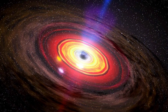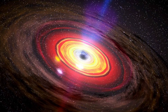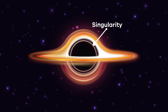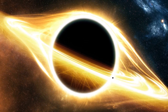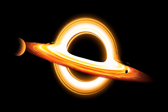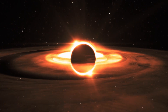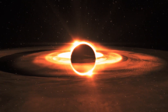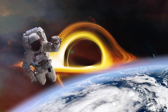This collapse creates a tiny, super-dense point called a singularity, which is surrounded by an event horizon. The event horizon is a boundary around a black hole. Rather than being a physical surface, it is a point where the escape velocity exceeds the speed of light.